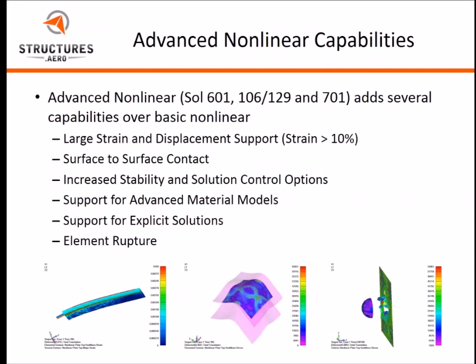Another big area is surface-to-surface contact. In basic, you would have to use gap elements to specify contact between two surfaces. And if the two surfaces displaced quite a bit from each other, you would actually result in erroneous answers. But with surface-to-surface contact, you're able to allow for large displacement between two different contact surfaces and still get proper contact results.